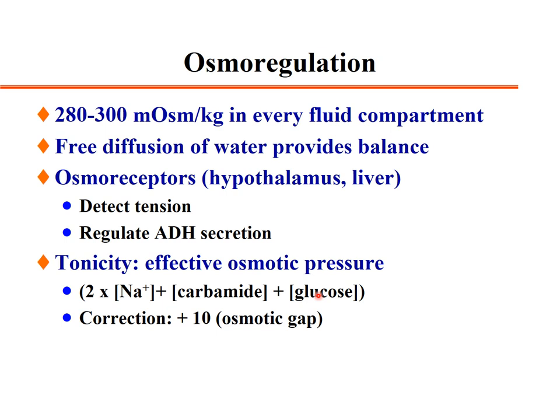The difference between measured osmolality — measured by freezing point depression of plasma — and calculated osmolality gives the osmotic gap. A normal osmotic gap is about plus 10, meaning plasma osmolality is slightly higher than the calculated value.